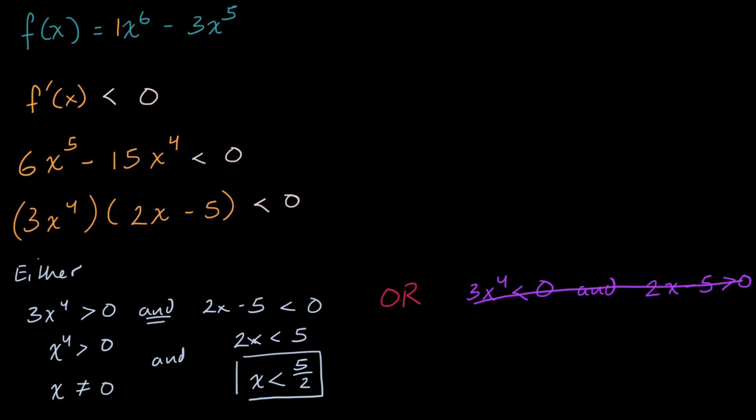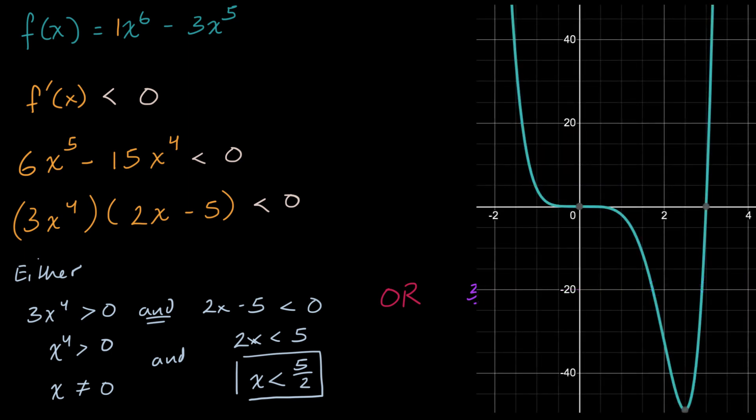And we can see that by graphing the function. I graphed it on Desmos. And you can see here that the function is decreasing from negative infinity. It's decreasing at a slower and slower rate. We get to zero, still decreasing to the left of zero. And then it continues to decrease to the right of zero.